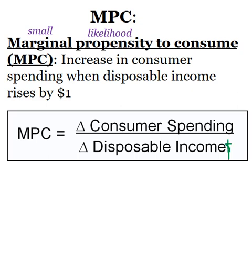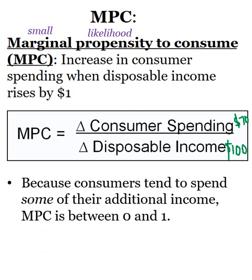So if someone received $100 and they spent $70 of it, their MPC would be 70 divided by 100, which is 0.7. If they spent $100 out of $100, their MPC would be 1. If they spent $10 out of $100, their MPC would be 0.1. The MPC can never be less than 0 — you can't spend less than zero of what you receive. If you spent all $100, your MPC is 1; if you spent $85, your MPC is 0.85. It's always going to be something between 0 and 1.